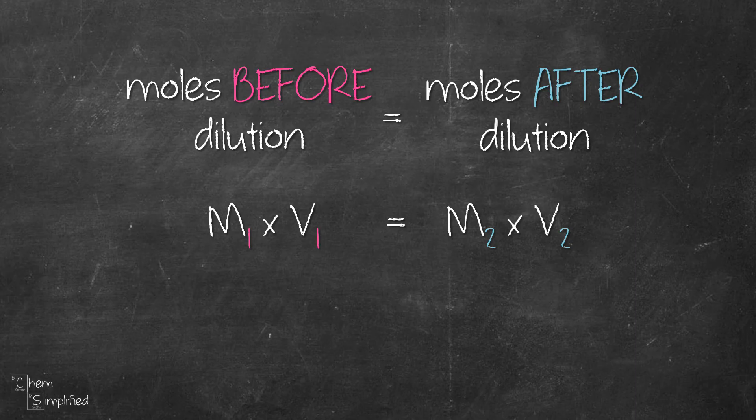In short, it's M1V1 equals M2V2. One is before dilution, two is after dilution. Sometimes you may hear one as concentrated or stock solution, two as the diluted solution.